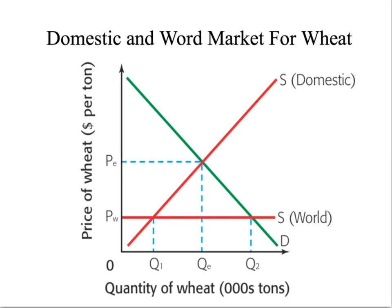As a result of this, you can see that U.S. producer revenue is equal to the area of this entire box.